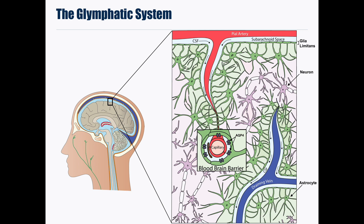Interstitial fluid is then cleared to the bloodstream across the postcapillary vasculature, cleared back to the CSF in the subarachnoid space, or to the cervical lymphatics via the spaces around draining veins. Convective bulk interstitial fluid flow drives the clearance of solutes from the tissue, and aquaporin-4 water channels, localized to astrocytic end feet that contribute to the blood-brain barrier, play an important role in the movement of fluids in the glymphatic system.